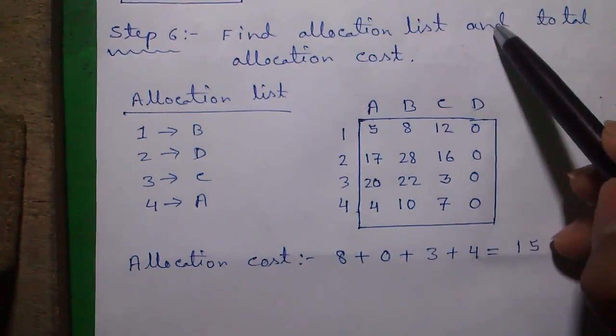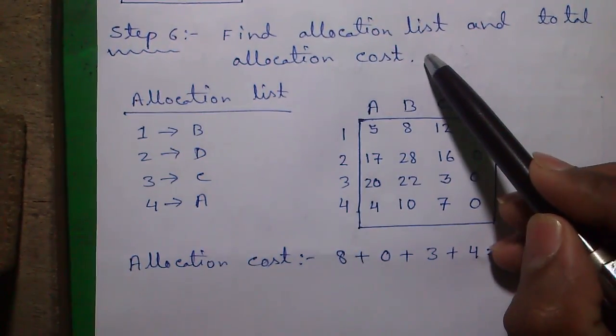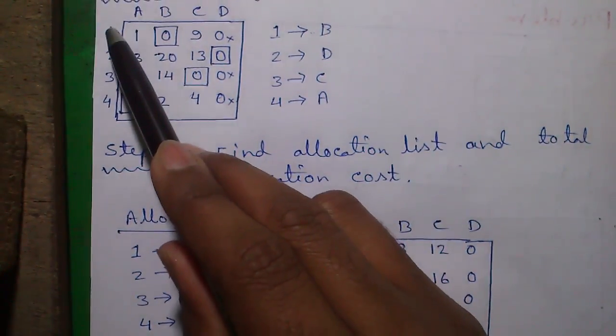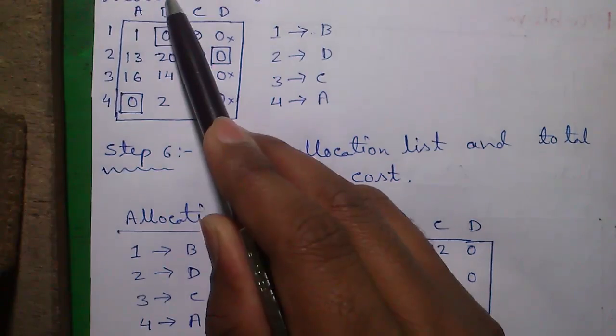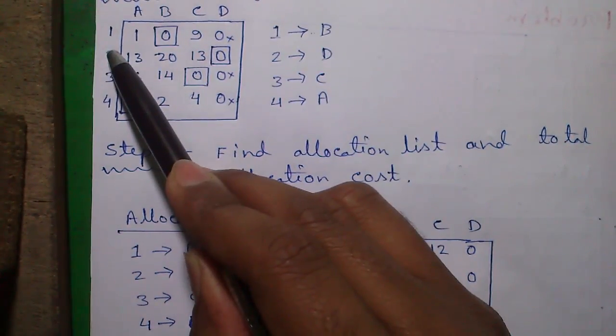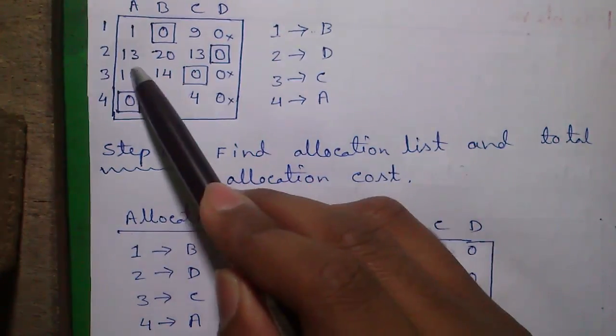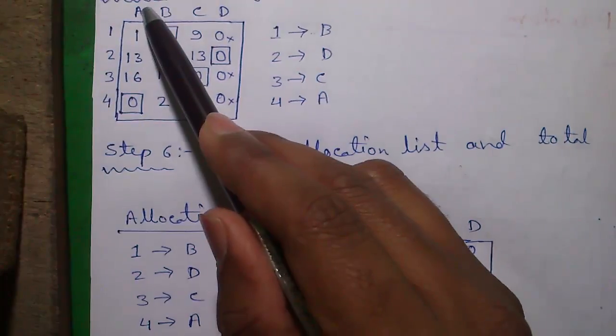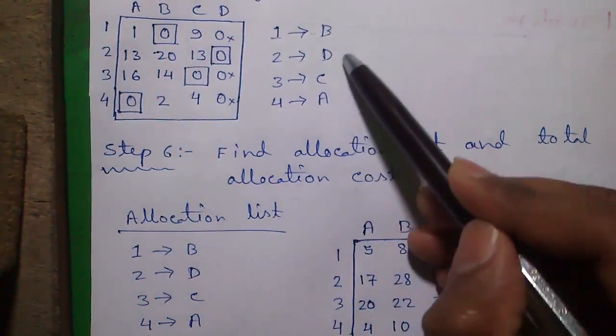Next, find the allocation list and the total allocation cost. Allocation list is machine 1 is allocated to person B, machine 2 is allocated to person D, machine 3 is allocated to person C, and machine 4 is allocated to person A. So these are our allocation list.